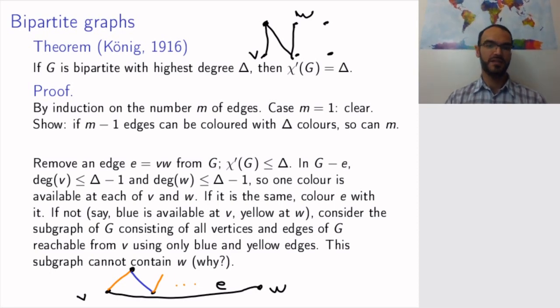And here's the funny thing. If you go from v, start with yellow, blue, yellow, blue, and so on, after an odd number of steps, you will be arriving to w on a yellow edge.